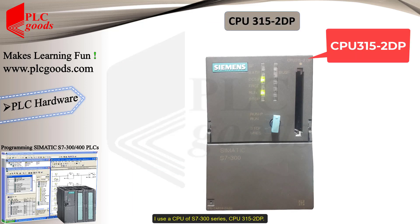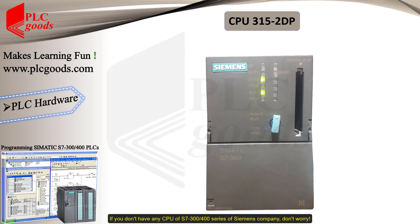The CPU is where the PLC program is stored. I use a CPU from the S7-300 series — specifically the CPU 315-2DP. If you don't have any CPU of the S7-300 or 400 series of Siemens, don't worry — you can use PLCSIM software to simulate and test your programs.